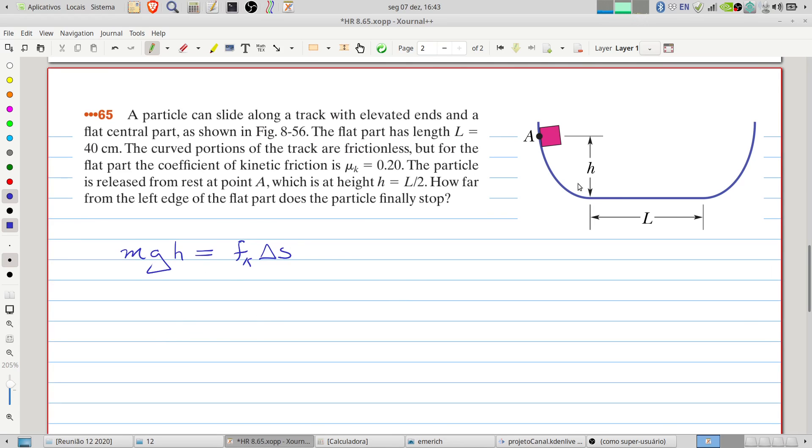The kinetic friction force can be written considering that the movement in the vertical direction—in the flat part of the track we won't have any vertical movement.